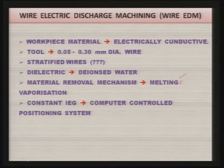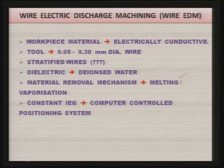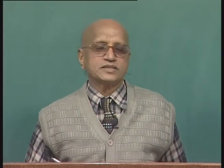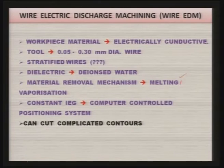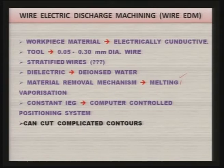As in EDM, the gap between the wire and workpiece must be maintained constant — that is, a constant inter-electrode gap (IEG) — and this is achieved by a computer-controlled positioning system. Wire EDM machines are CNC (computer numerically controlled) machines. A key advantage is that wire EDM can be used for cutting complicated contours, even three-dimensional contours.